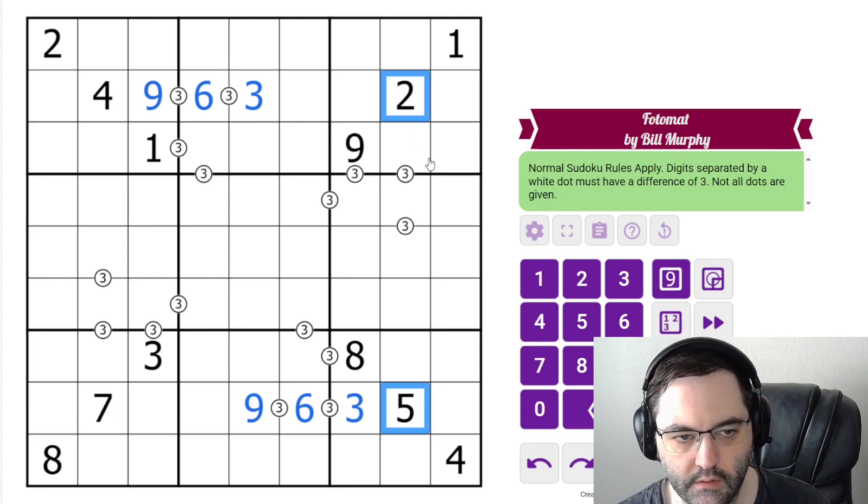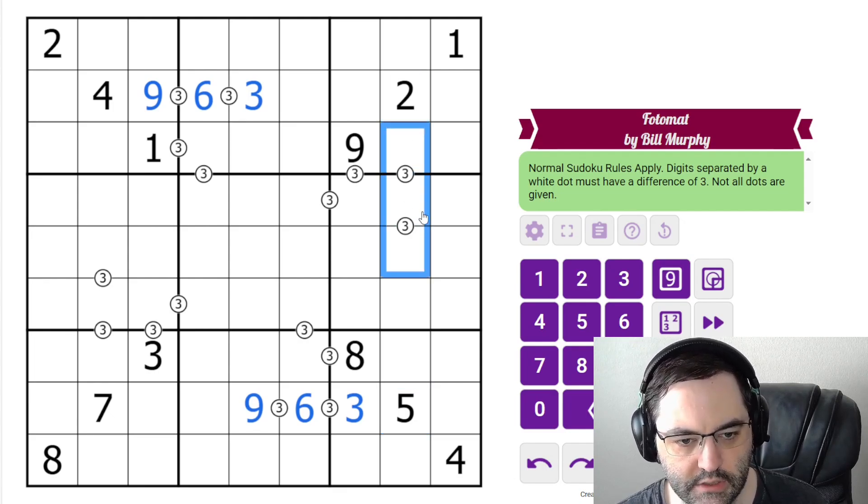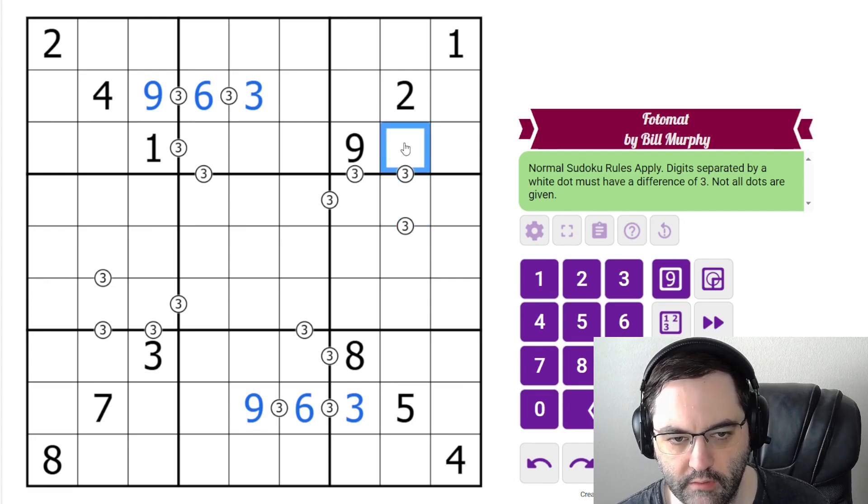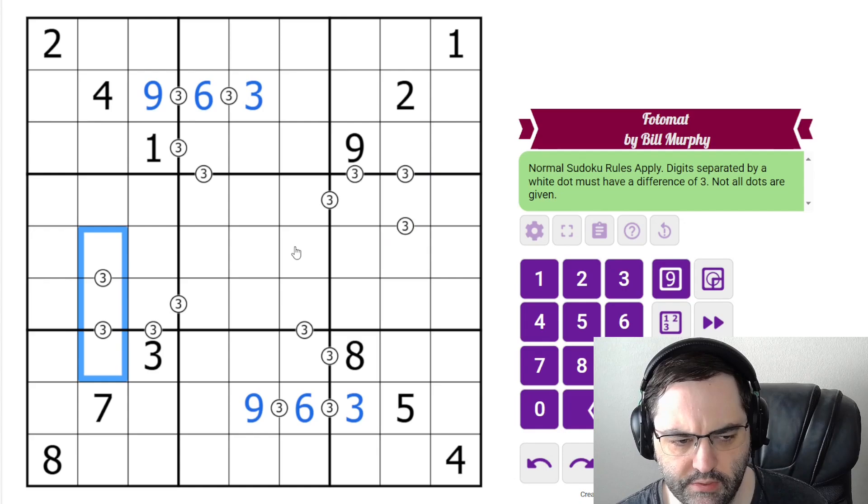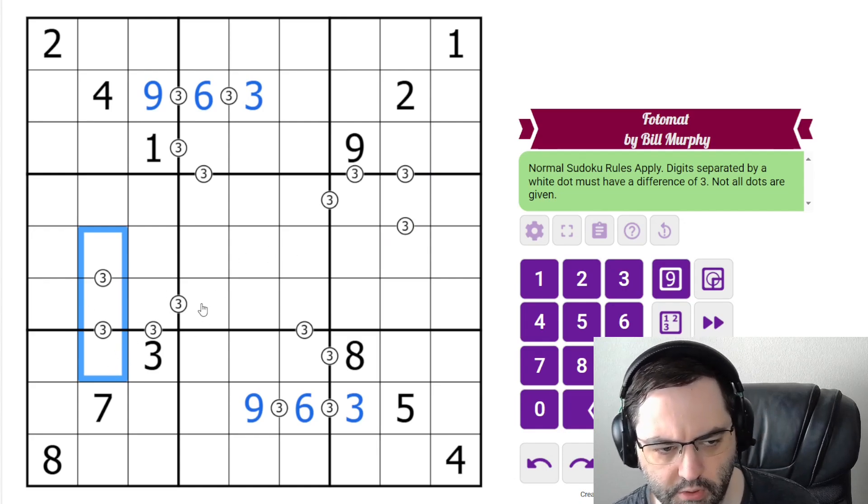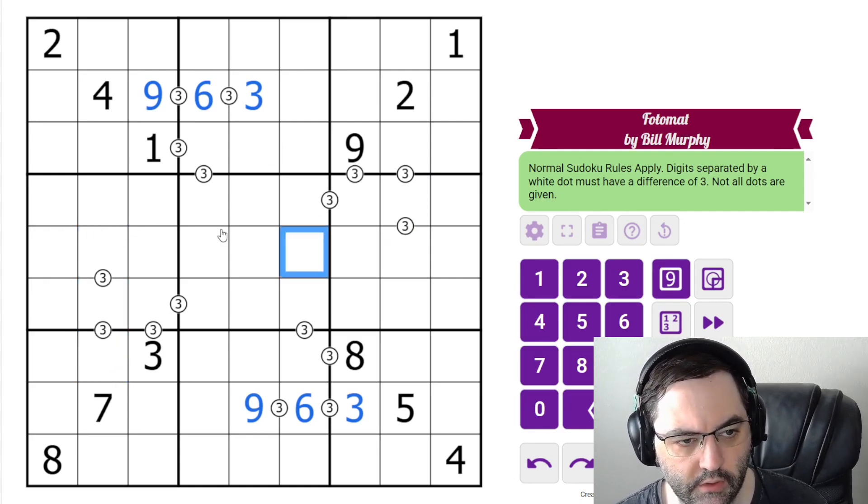It can't be two, five, eight. So we have matching digits there. If it were one, four, seven, it would have to be one, four, seven like that. There's no problem. If it were three, six, nine, the three would have to go here. Six, nine. Again, no problem. So we have two possibilities there. I think we probably have two possibilities here as well. So we'll come back to those.